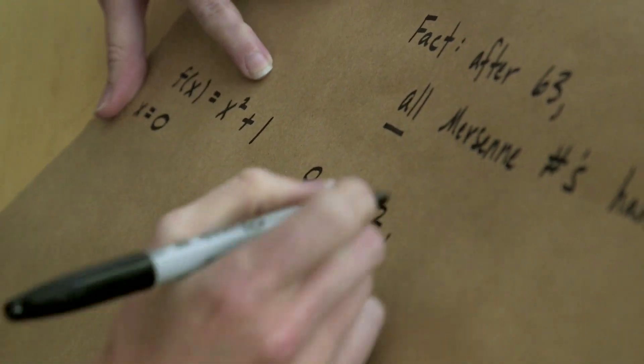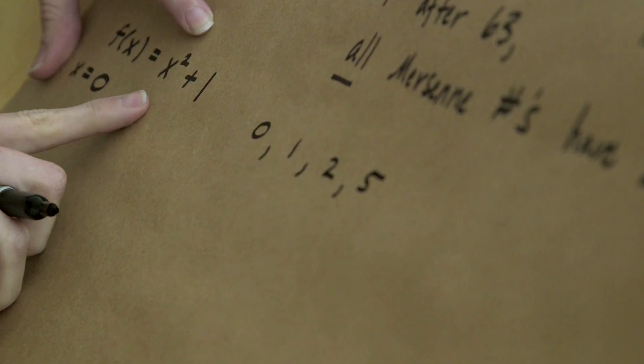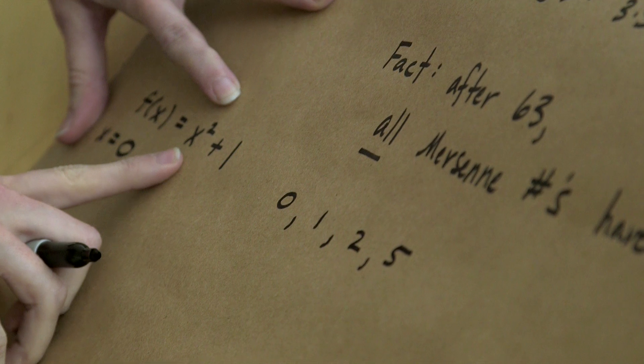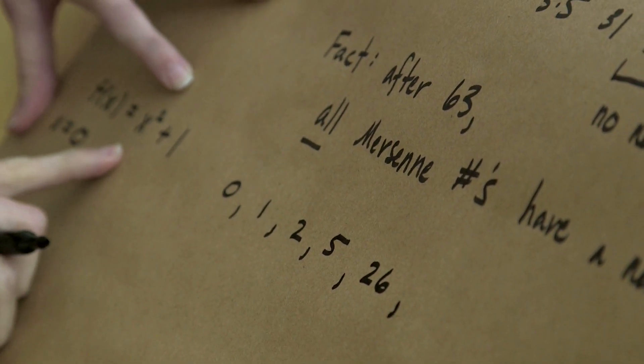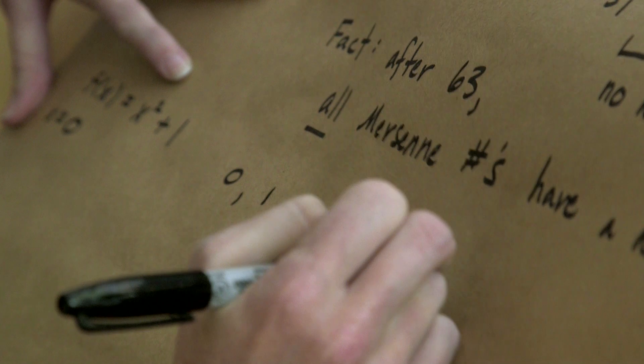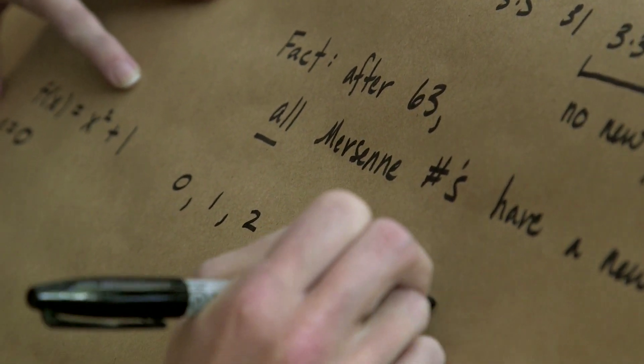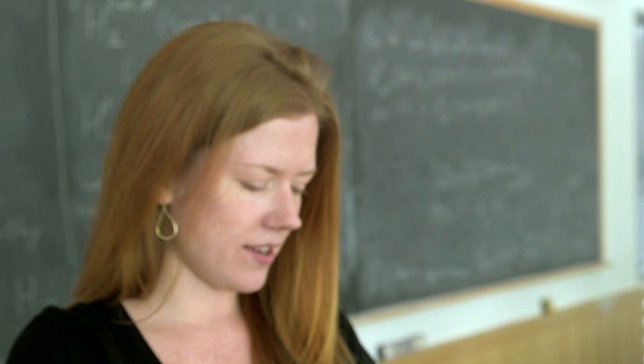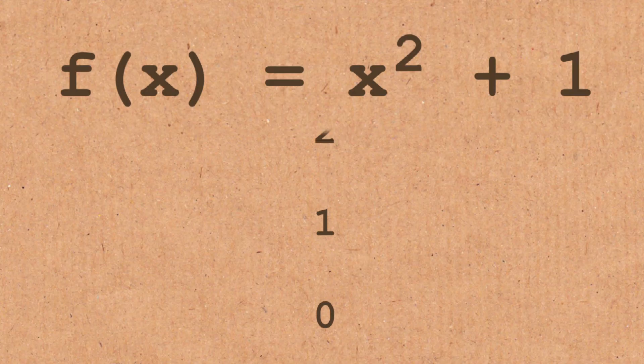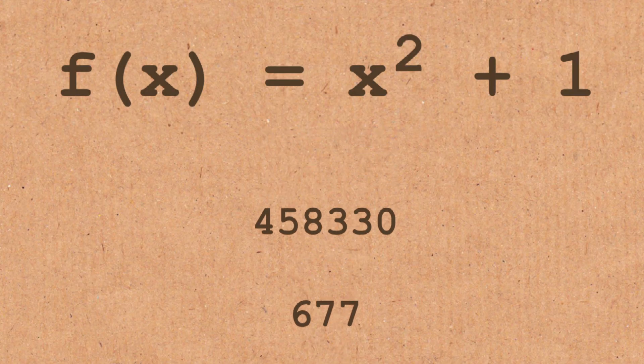When we plug 2 in, we have 2 squared plus 1, which is 5. We plug 5 in, we have 25 plus 1, which is 26. And when we plug 26 in, I happen to know we end up with 677. So because I'm dealing with an x squared instead of an x here, the sequence gets larger much faster. But still we get this sequence of integers.